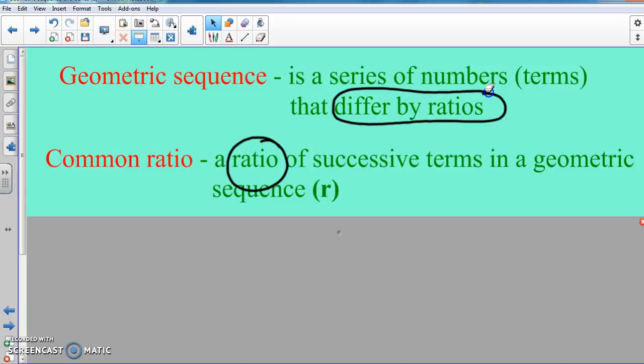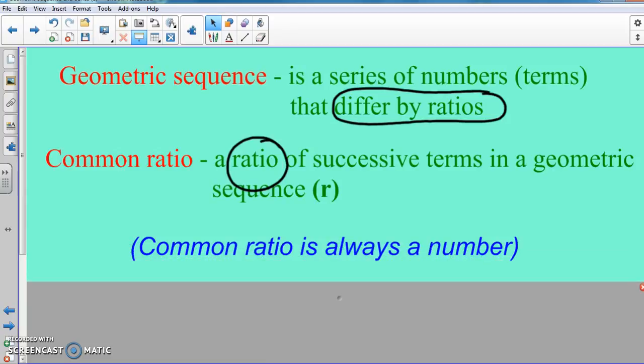Now whenever we deal with our common ratio, the answer is always a number. So no matter what happens, common ratio is always a number.